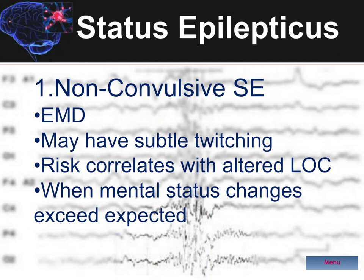Clinically, patients can present with an altered sensorium with fairly minimal motor activity manifestations — maybe some eye twitching or some muscle twitching. The likelihood of developing non-convulsive status is related to your degree of alertness, such that seizures are detected in only 6% of awake patients, 20% of lethargic, 25% of stuporous, and up to one-third of comatose patients may actually be suffering from non-convulsive status epilepticus.